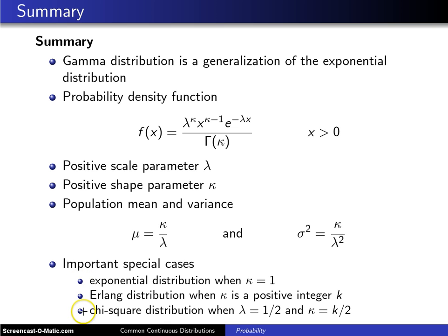There are three important special cases of the gamma distribution. First, the gamma distribution collapses to the exponential distribution when κ = 1.